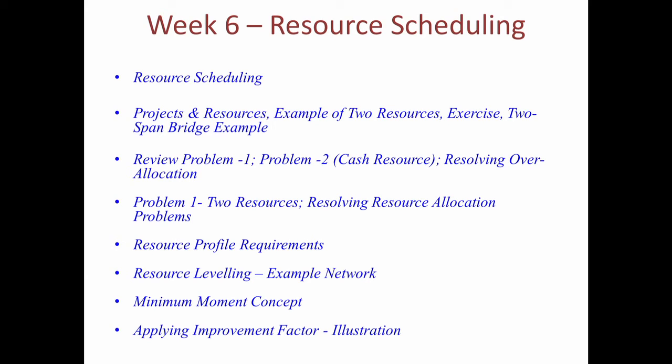In week six, we moved on to resource scheduling, an important area where we covered several aspects. We started with very basic elements — how to load resources, how to allocate resources, the over-allocation problem, cumulative resource graphs, and specific weekly resource graphs. We then talked about how over-allocation can be resolved using floats. We went on to resource profiling, specifically resource leveling, discussing leveling from an intuitive perspective and introducing the concept of minimum moment and the improvement factor in order to assess if a resource histogram was at the proper level of leveling. We assumed a rectangular profile is what we want and generated an improvement factor showing whether there was improvement when resources were shifted.